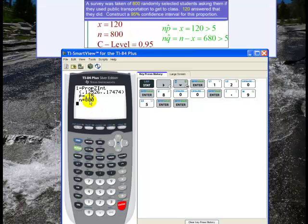And that gives me my confidence interval of 0.12526 comma 0.17474. I'm going to round to about 0.13 and 0.17. Also p̂ is the proportion of successes and that's calculated as 0.15.